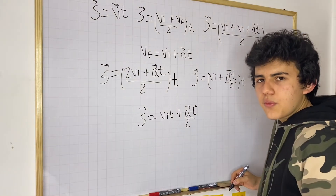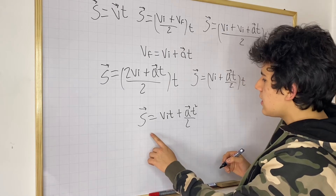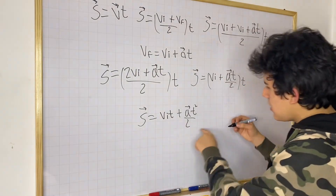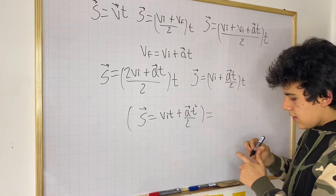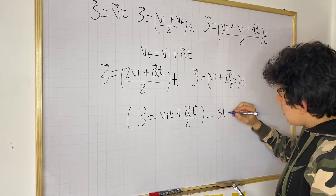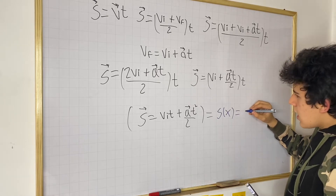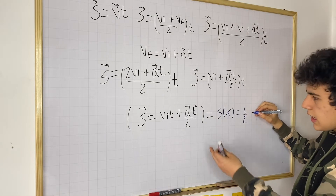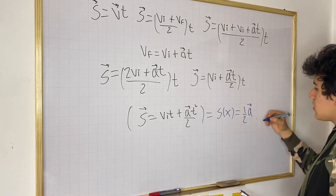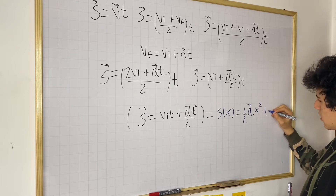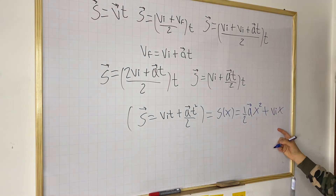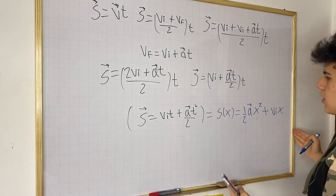This is a pretty common equation you may have seen before — it's a quadratic equation. To see it clearly in algebraic form, we can write s(x) equals one-half times acceleration times x squared plus initial velocity times x. Here acceleration is the coefficient of x squared (a constant, assuming constant acceleration), and initial velocity is the coefficient of x. This makes the quadratic form quite clear.